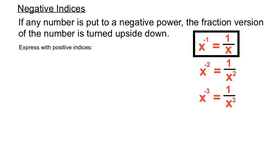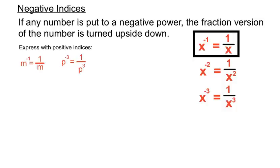Here are some examples showing the sorts of questions we get with negative indices. We're asked to express with positive indices — in other words, to use up the negative part of the index. So m to the minus 1: we take the idea that m would have had a 1 under it in fraction form, flip it upside down — we call it reciprocating — so m to the minus 1 ends up as 1 over m. And p to the minus 3: we turn that upside down and have 1 over p cubed, with p still carrying the index of 3 but now on the bottom of the fraction.